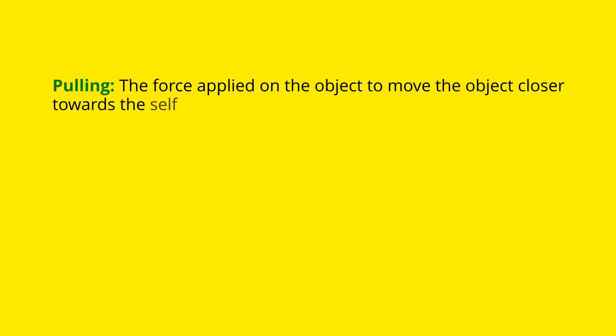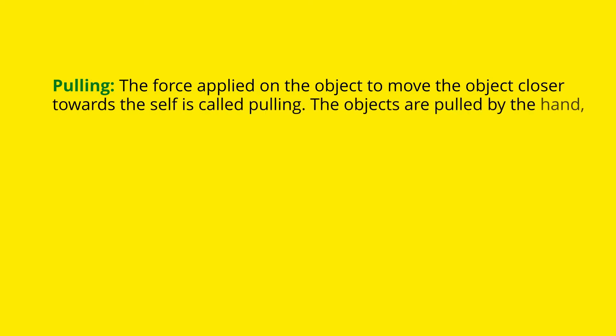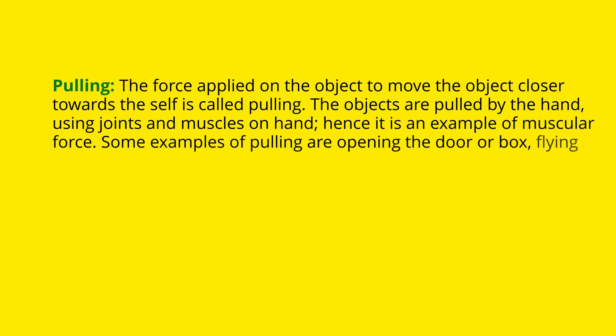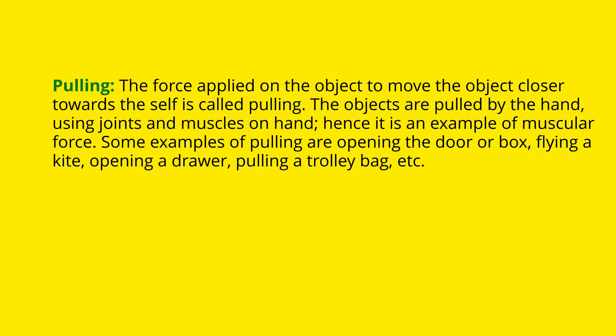Pulling: the force applied on an object to move it closer towards oneself is called pulling. Objects are pulled by the hand using joints and muscles of the hand, hence it is an example of muscular force. Some examples of pulling are opening a door or box, flying a kite, opening a drawer, and pulling a trolley bag.